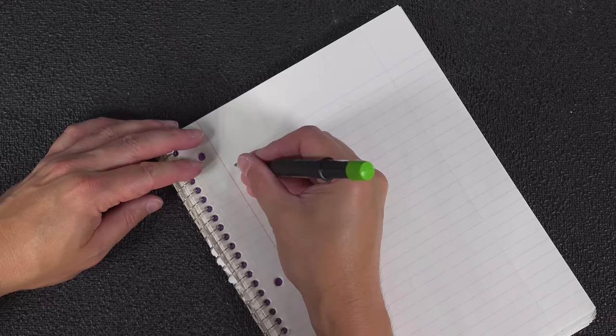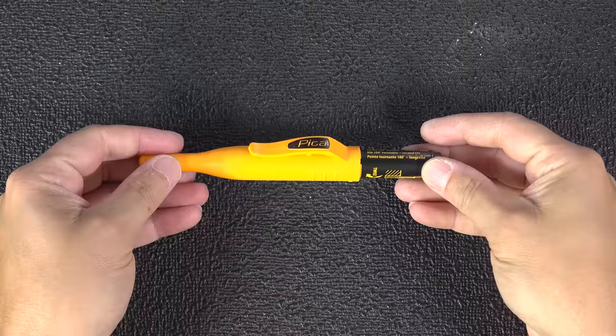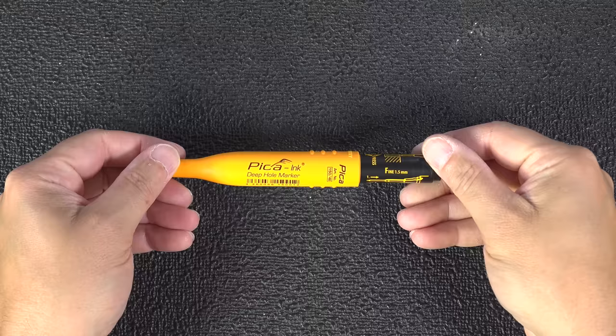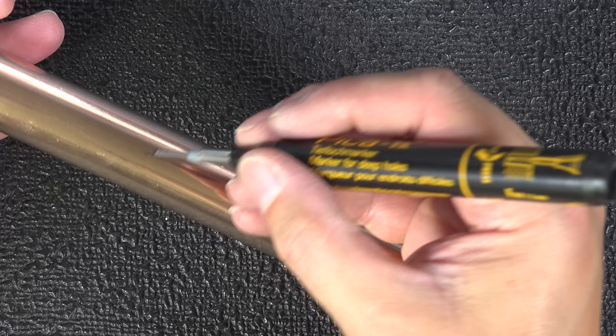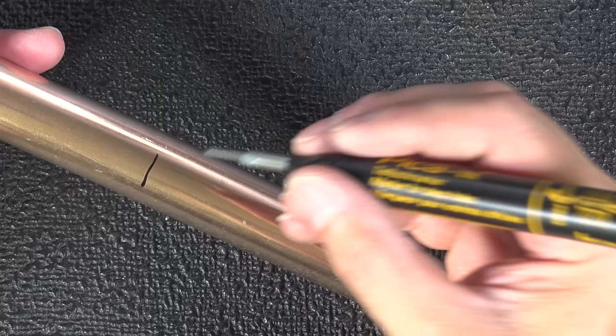But what if you don't want to use a pencil, or you just want something more permanent? And this is Pika's version of a Sharpie, but this one's a lot different, starting with the tip. It's really fine making it perfect for doing things like plumbing cuts, electrical, or any type of precision marking.